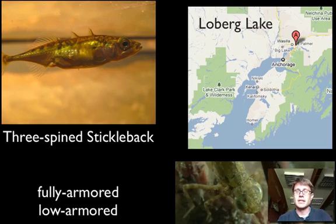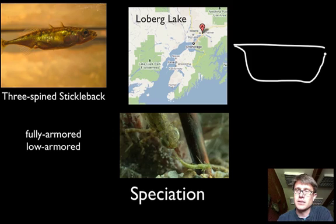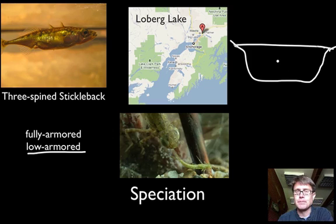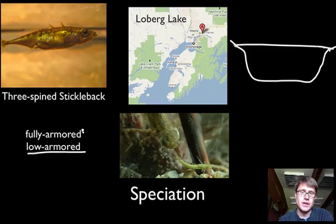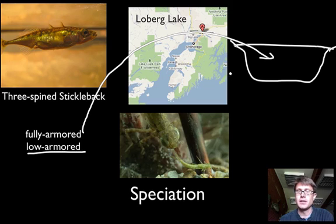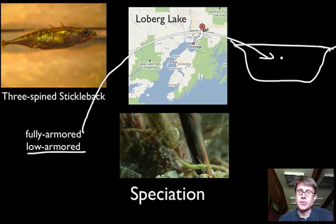A natural experiment occurred in 1982. In Loberg Lake, almost all sticklebacks were the low armored variety. That year the lake was poisoned to remove sticklebacks so trout and salmon could be introduced. Over the next few years, fully armored sticklebacks made their way into the lake — probably through streams from the ocean — and their population started to grow.